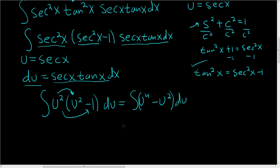And we can integrate using the power rule. So this will be u to the fifth over 5 minus u cubed over 3 plus our constant.